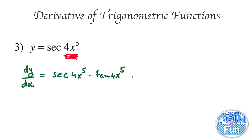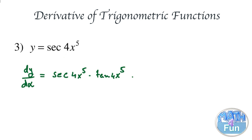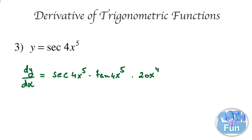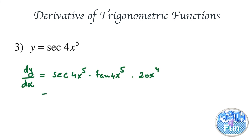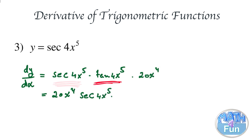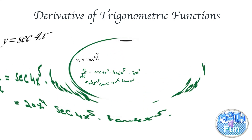Don't forget to multiply by the derivative of the inside, which is the derivative of 4x to the power 5. That gives us 20x to the power 4, because we drop down the 5, multiply it by 4, and take away 1 from the power. Written properly: 20x to the power 4 times secant of 4x to the power 5 times tangent of 4x to the power 5.